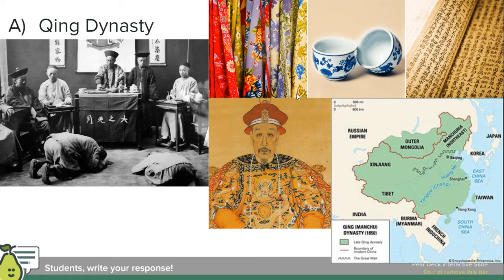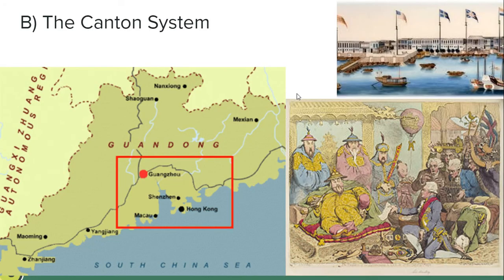You'd have to show up and kowtow before the emperor — or actually, if you're a foreign trader, you'd be kowtowing before some imperial official to show the subservience of your government. And the Canton system limited all European trade to the one city of Guangzhou, and in fact just one district within the city of Guangzhou, where all foreign trade had to happen.